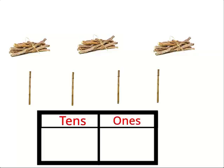There are three bundles of 10 sticks and 4 sticks. So we can write the number as three 10s and four 1s, and the number is 34.